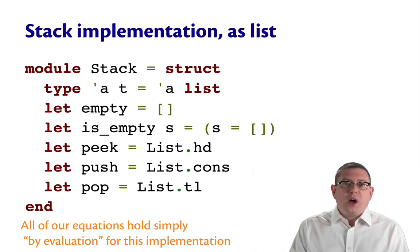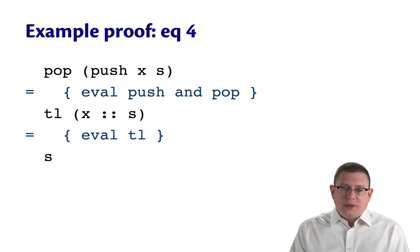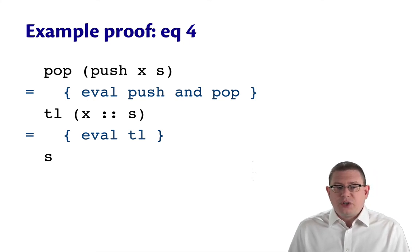The fourth equation, which shows that pop and push cancel out each other. Well, here, if we evaluate pop and push, then we're going to replace push with the cons operation, pop with the tail operation, and that's going to give us back just the original stack, because that's how tail is defined.